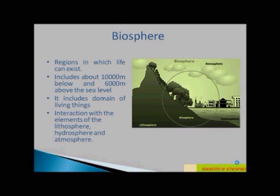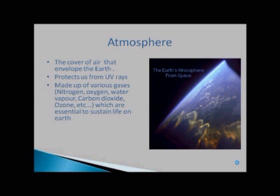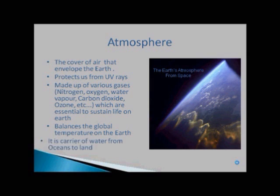Fourth segment of environment is atmosphere. The cover of air that envelops the Earth is known as atmosphere. It protects us from ultraviolet rays. It is made up of various gases like nitrogen, oxygen, water vapor, carbon dioxide, ozone, etc., which are essential to sustain life on the Earth. It balances the global temperature on Earth. And it is carrier of water from ocean to land.